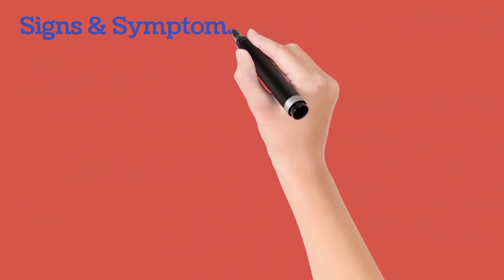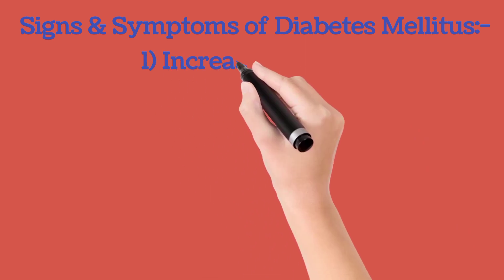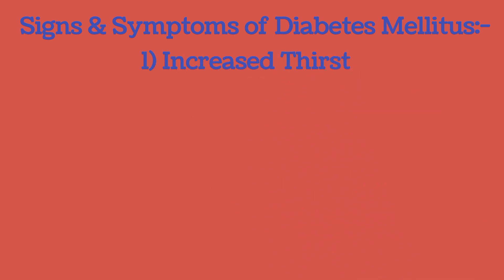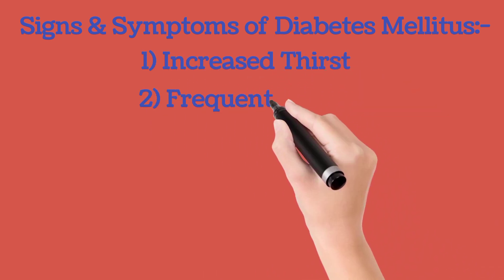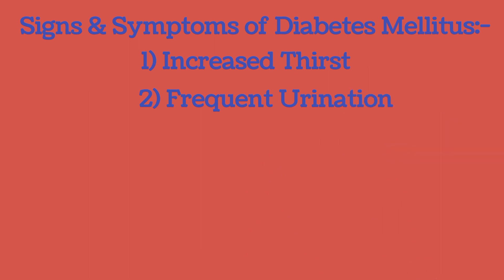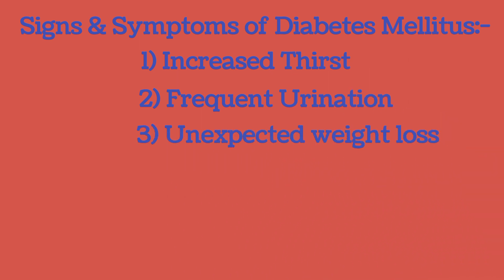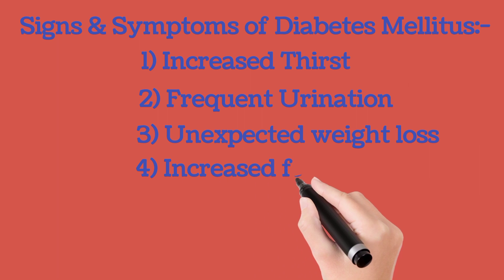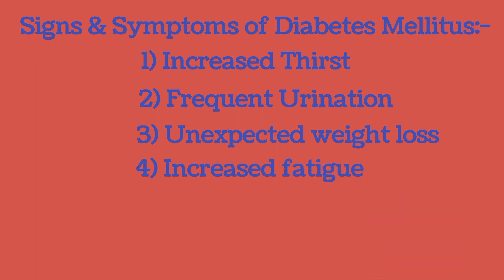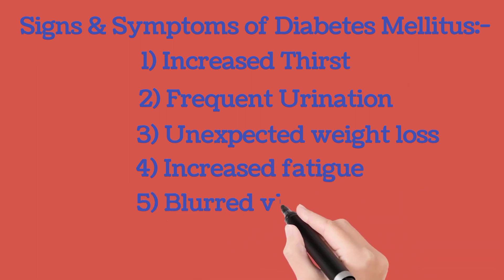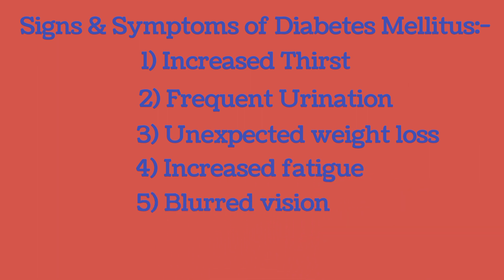Now, let's see the signs and symptoms of diabetes mellitus: increased thirst, frequent urination, unexpected weight loss, increased fatigue, blurred vision, irritability, and slow healing of cuts. These are the common signs and symptoms of diabetes mellitus.